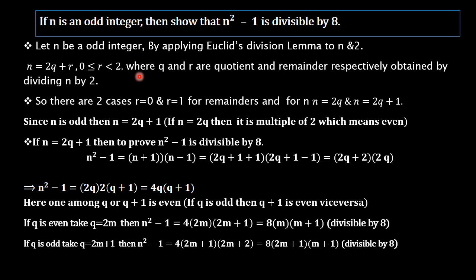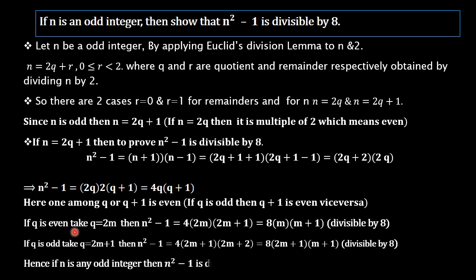Now if q is odd, we take q = 2m+1. Then n²-1 = 4 · (2m+1) · (2m+2) = 4 · (2m+1) · 2(m+1) = 8(2m+1)(m+1). So in this case also, n²-1 is divisible by 8. Therefore, in both cases n²-1 is divisible by 8. Hence the result.